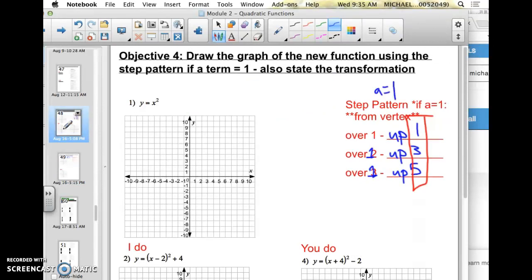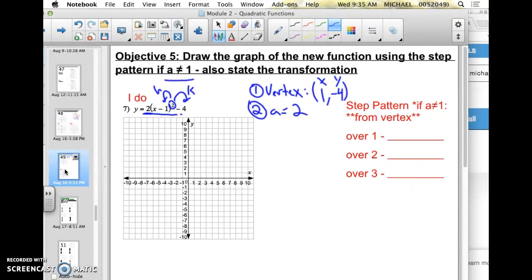So if you remember the parent function y equals x squared, all of those y values would double. So in this case, all I'm going to reference is the original step pattern when the a was 1. The vertical, the y motion, was the pattern over 1, up 1, over 1, up 3, over 1, up 5. Now, these numbers are going to be multiplied by 2.